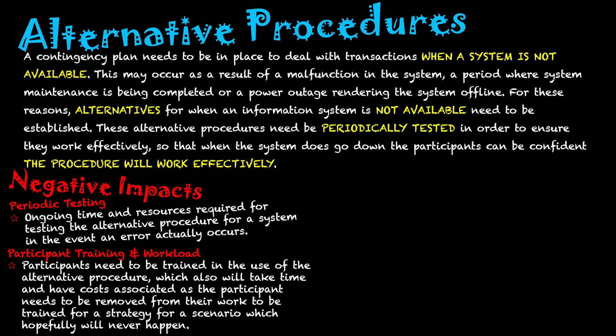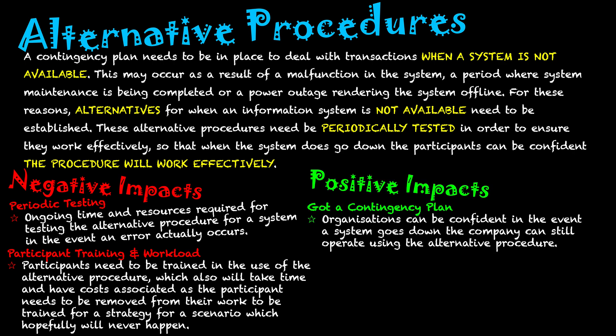So the negatives are essentially time, costs, and resources. Though on the positive side, we've got a contingency plan — like the Batman analogy, whenever he faces someone, he's always got a plan up his sleeve. That's what we've got for our organization: a backup plan if our system goes down. The organization can be confident that in the event the system goes down, it can still operate using the alternative procedure.